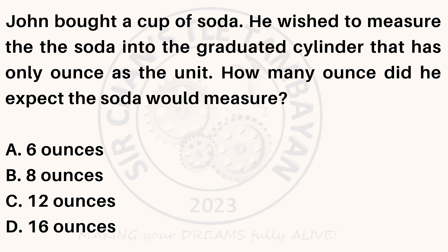John bought a cup of soda. He wished to measure the soda into a graduated cylinder that has only ounces as the unit. How many ounces did he expect the soda would measure? A. 6 ounces. B. 8 ounces. C. 12 ounces. D. 16 ounces.